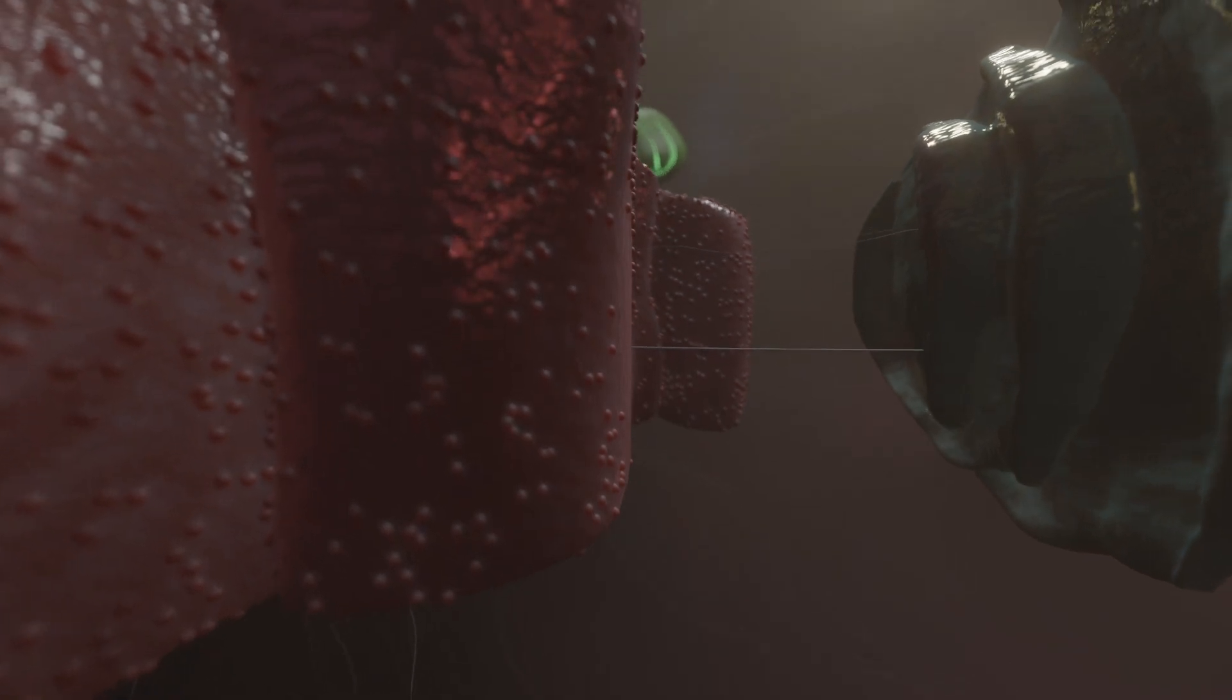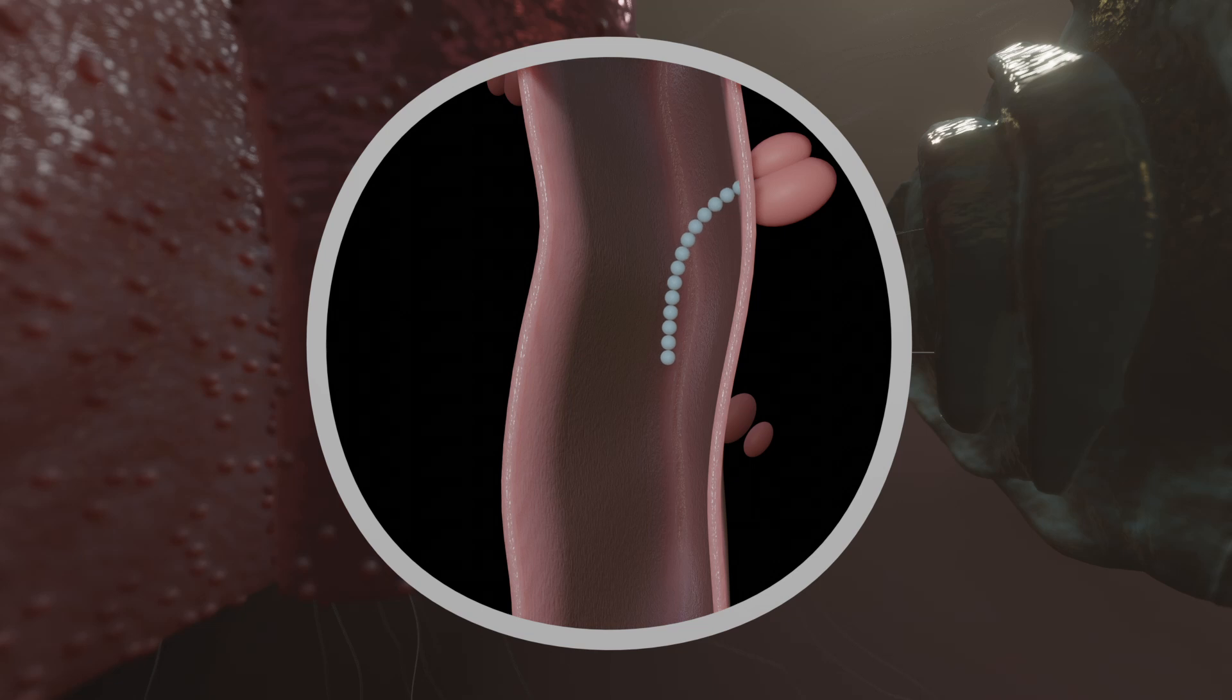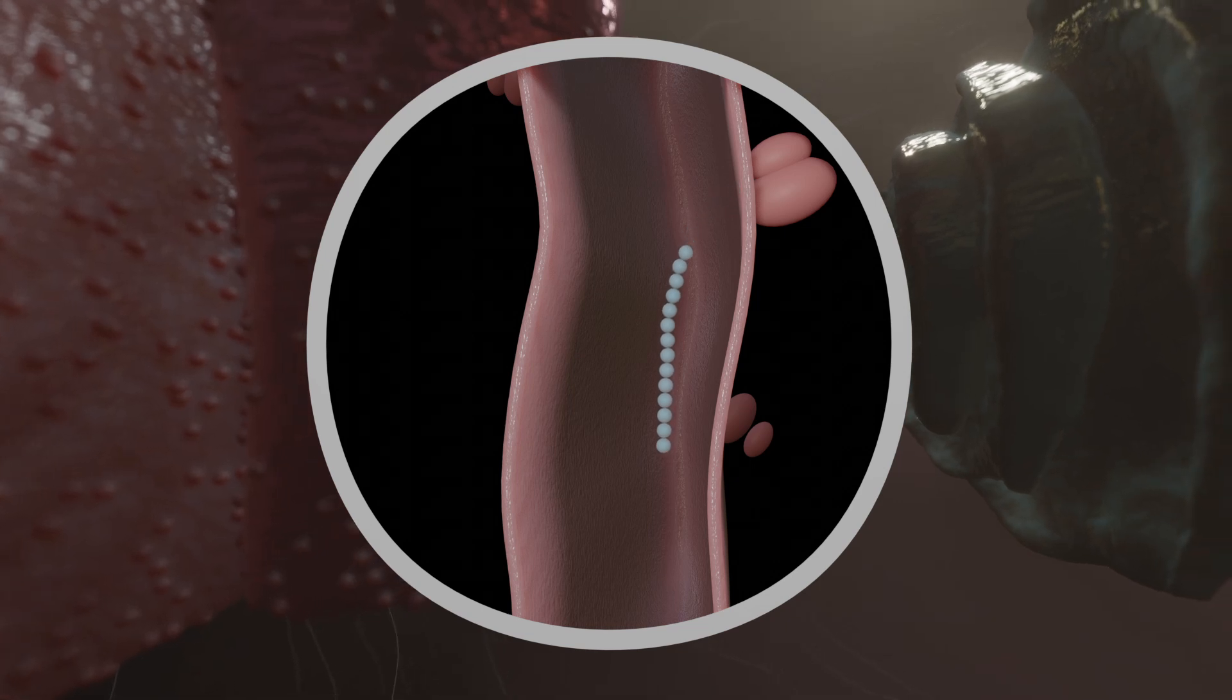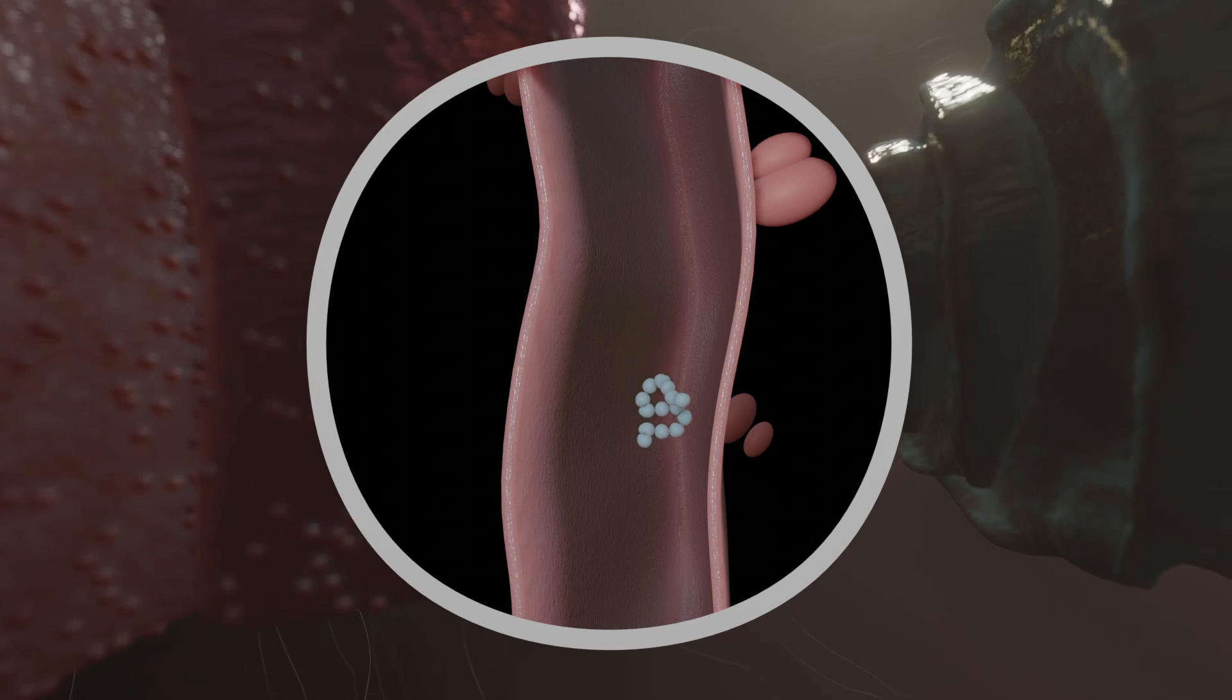The rough endoplasmic reticulum is responsible for the production of proteins, among other things. Ribosomes are located near the outer surface of the rough endoplasmic reticulum, which synthesize proteins directly into the inner cavity. There they mature and are finally transported to their destination with the help of vesicles.